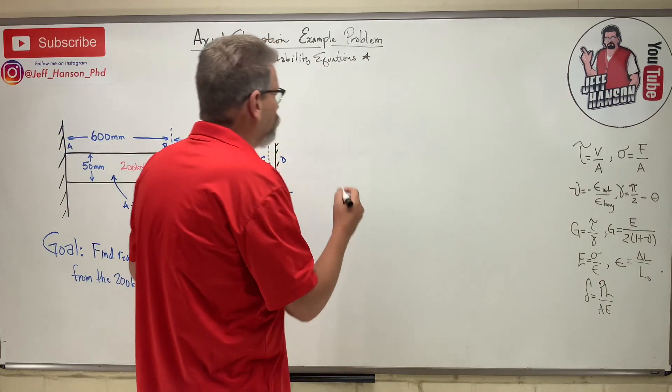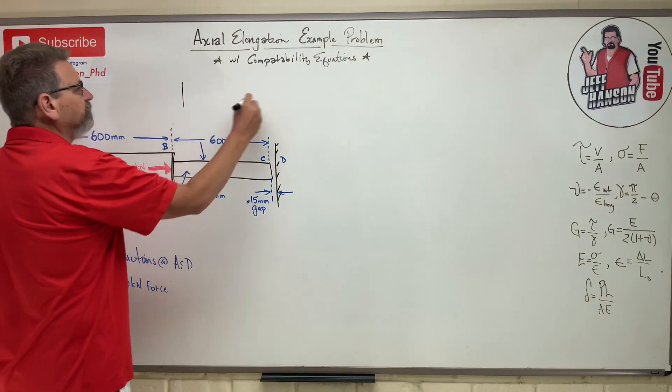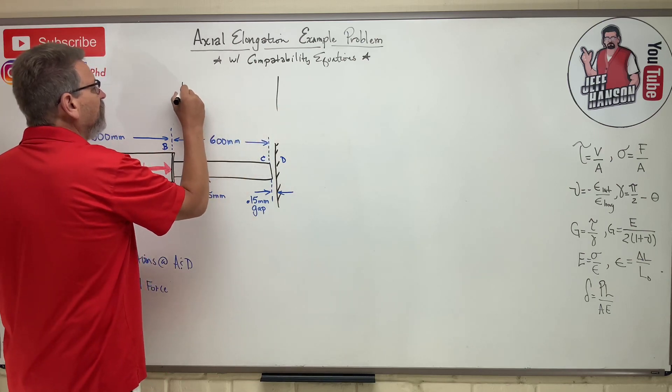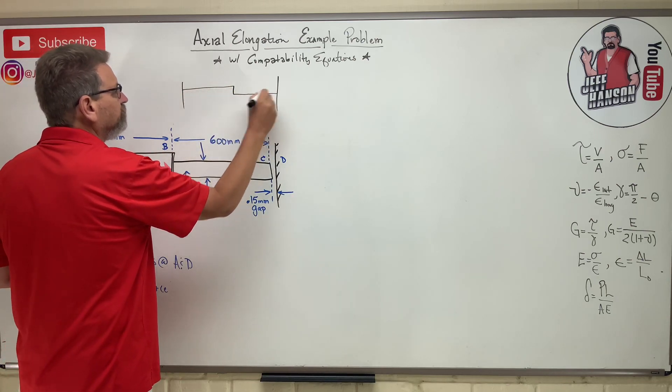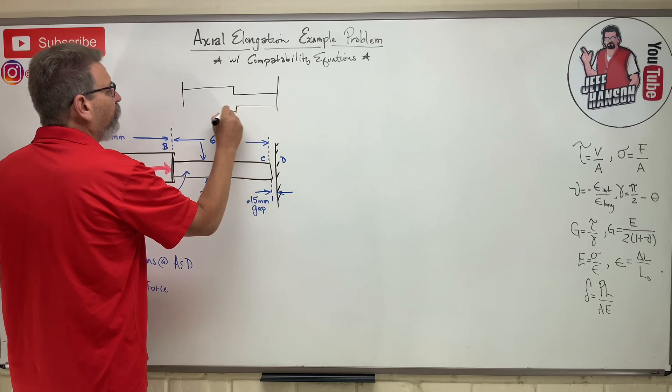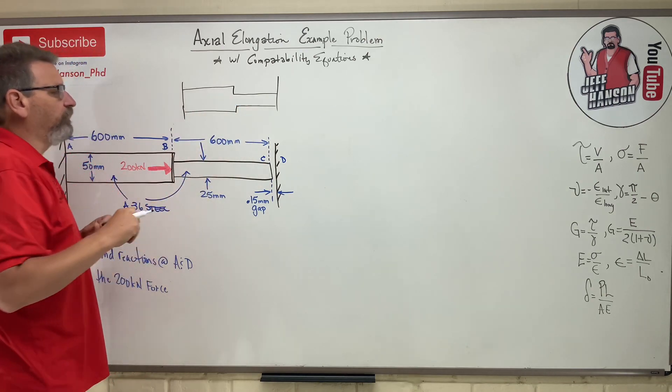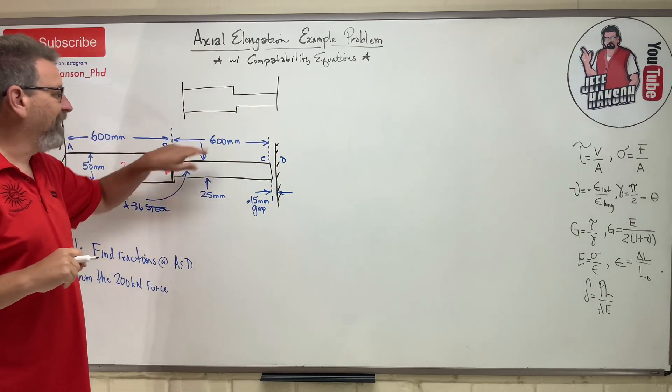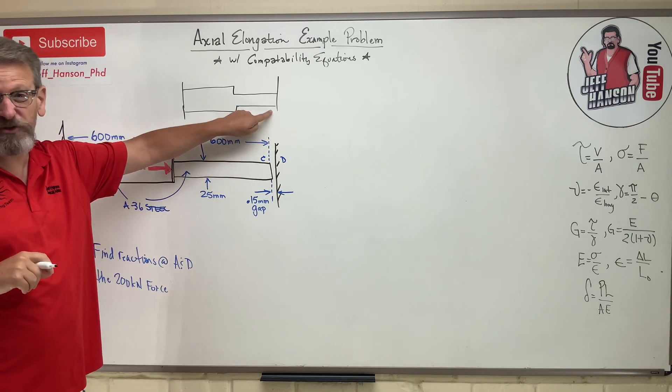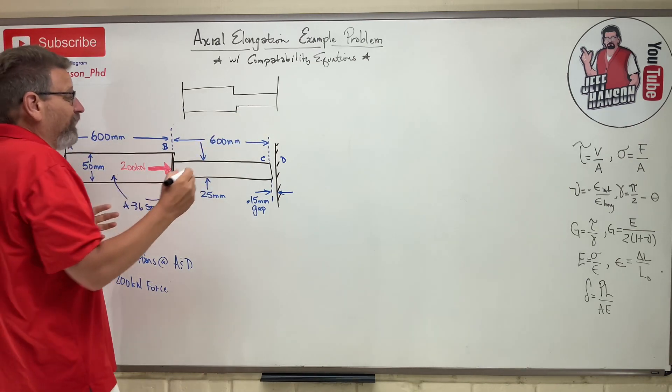So if you've got a wall here, a wall there, and here's this bar. And we're going to assume that this bar, when it gets this force applied to it, that it's going to close that gap and it's actually going to touch that other wall. So what's going on there? Well, there's a 200 kilonewton force here.